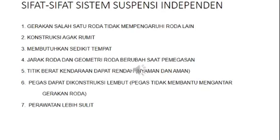Itu adalah sifat-sifat dari sistem suspensi independen. Kalau dilihat dari namanya, independen artinya bebas. Berarti sistem suspensi independen adalah sistem suspensi di mana masing-masing roda kiri dan roda kanan bergerak bebas. Seperti sifat yang pertama tadi, gerakan salah satu roda tidak mempengaruhi roda yang lain. Antara gerakan roda kiri dan roda kanan itu bergerak sendiri-sendiri.